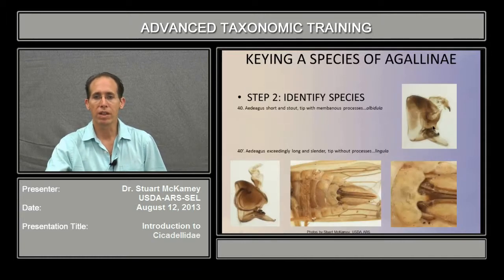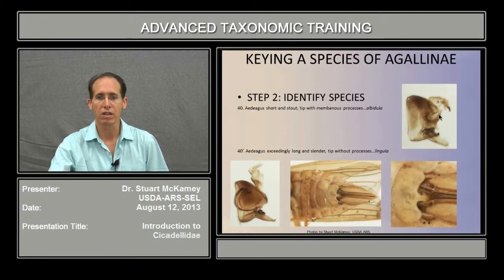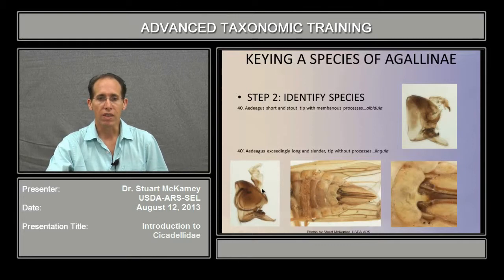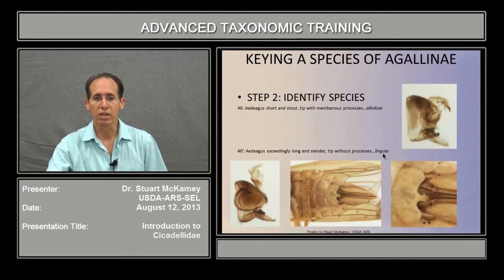In couplet 40, the aedeagus is short and stout — this structure seen through the pygofer, the last segment that holds the genitalia, in albigula — or very long and slender, which is what we see in our specimen. Very long, slender, tip without processes: lingula. And this is one of the species where the female can also be identified externally.